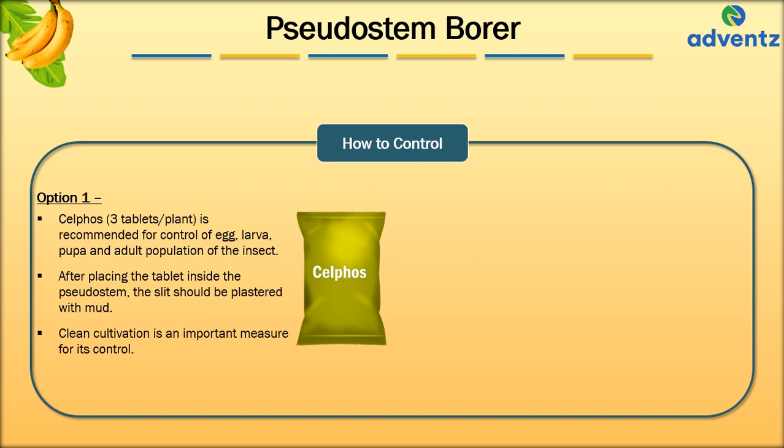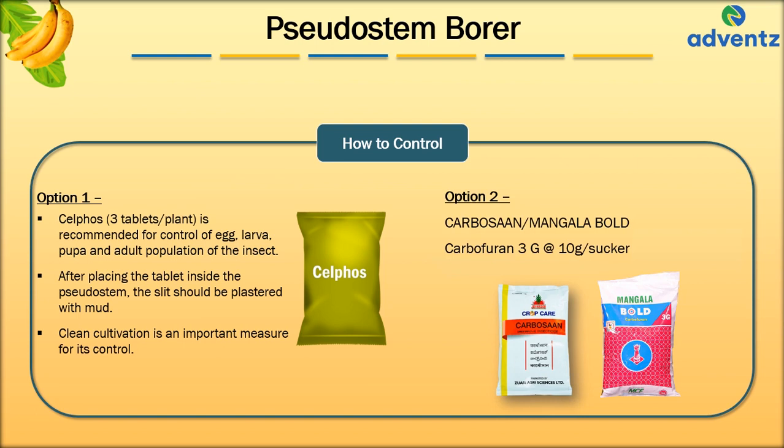The second option is to apply Carbosan or Mangala Bold, which is Carbofuran 3G, at the rate of 10 grams per sucker. It is very effective to control the pest.